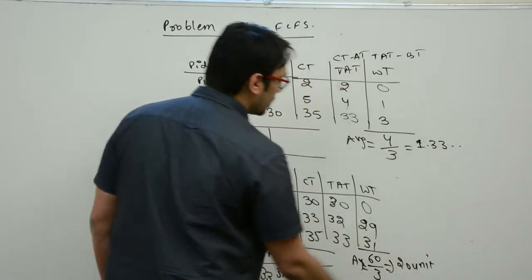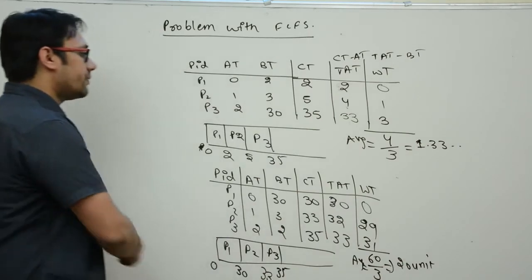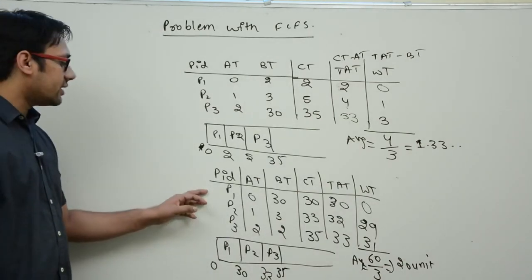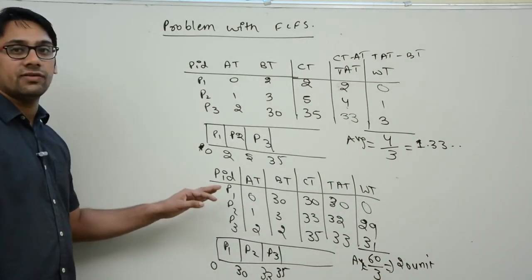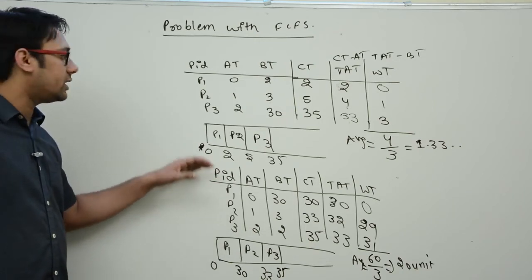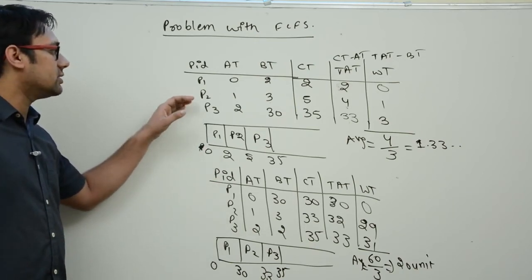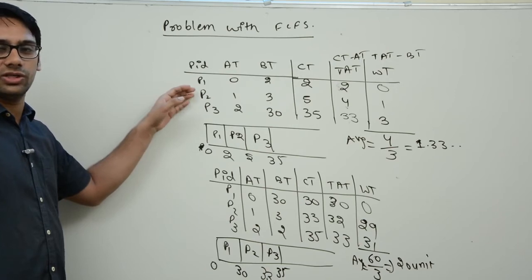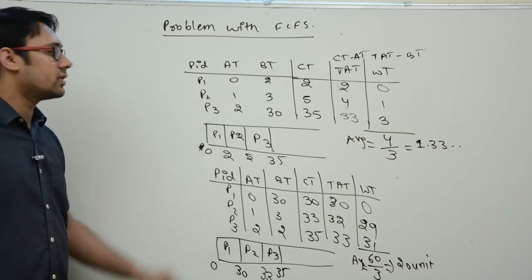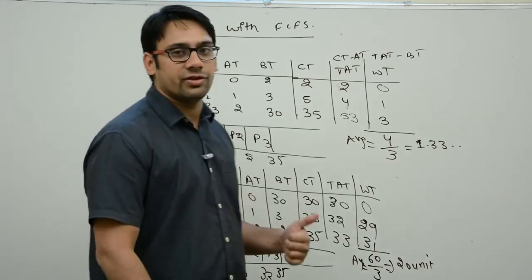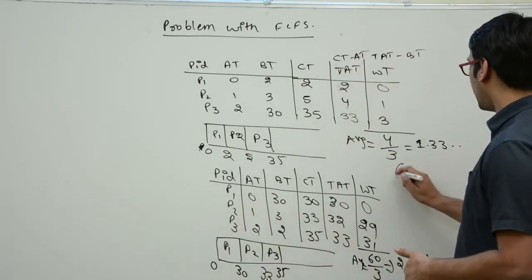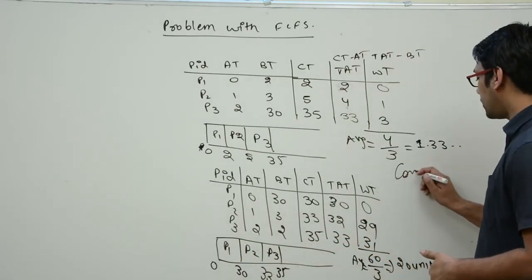The only difference between the two cases is that here the process with the highest burst time came first, while in the first case the process with the lowest burst time came first. This kind of effect is also called the convoy effect.